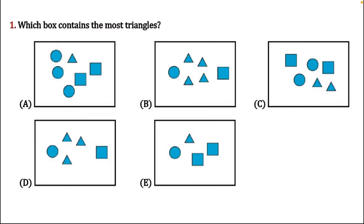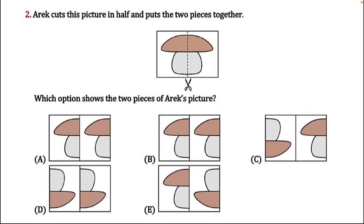Now moving to the question — which box contains the most triangles? We know which one is the triangle, so we just have to count the number of triangles in each option. Option A has only one triangle, option B contains four triangles, option C has two triangles, option D consists of three triangles, and option E has only one triangle. So option B is our correct answer.